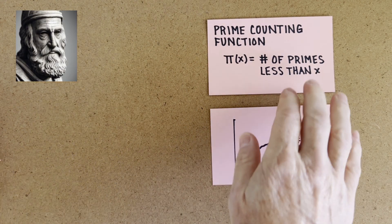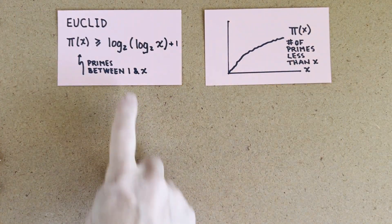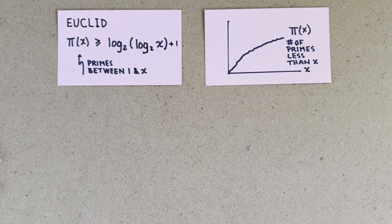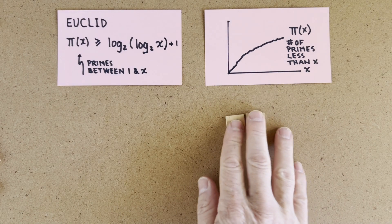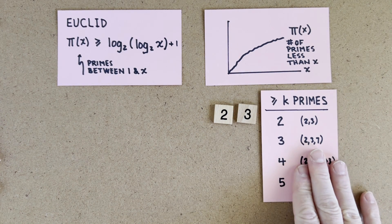Euclid showed that there's an infinite number of primes. And we can turn his proof into a stronger statement that π(x) is greater than such and such for all x. Euclid's proof is basically a factory that spews out primes. First, pretend that 2 and 3 are the only primes.